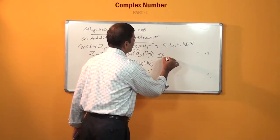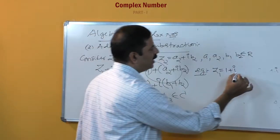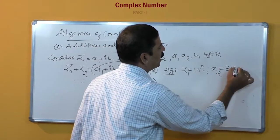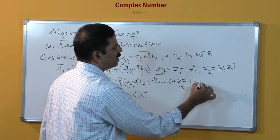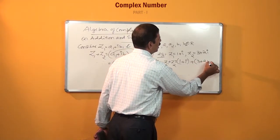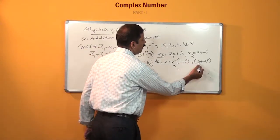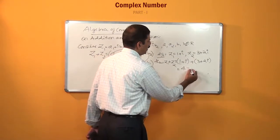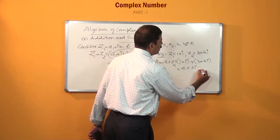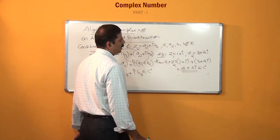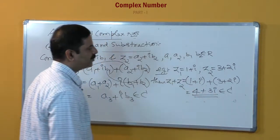For example, if z1 equals 1 plus i and z2 equals 3 plus 2i, then z1 plus z2 equals 1 plus i plus 3 plus 2i. Adding real parts: 1 plus 3 equals 4. Adding imaginary parts: i plus 2i equals 3i. So z1 plus z2 equals 4 plus 3i, where real part is 4 and imaginary part is 3.